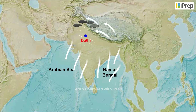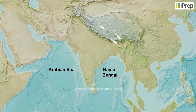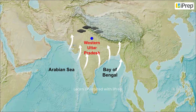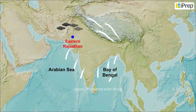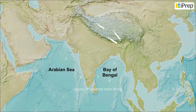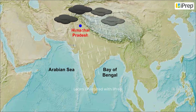Delhi receives rainfall by the end of June from the Bay of Bengal branch. By the first week of July, the monsoons reach western Uttar Pradesh, Punjab, Haryana, and eastern Rajasthan. By mid-July, they reach Himachal Pradesh and the rest of the country.